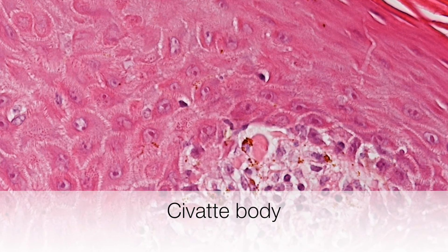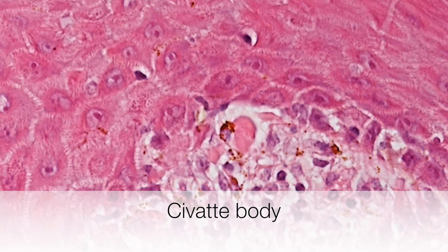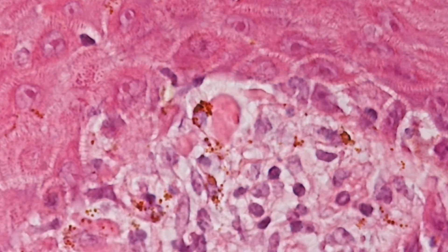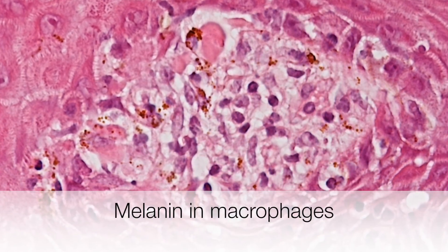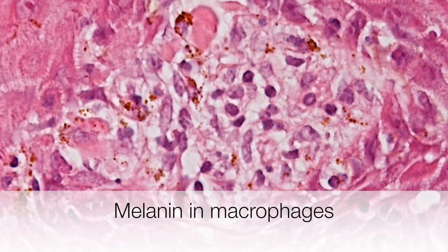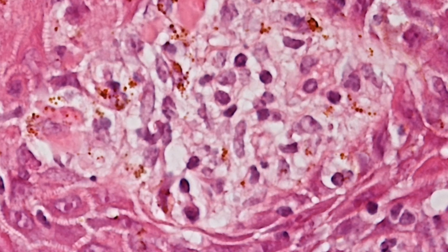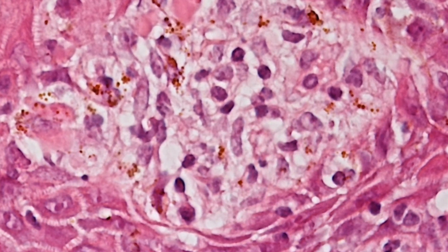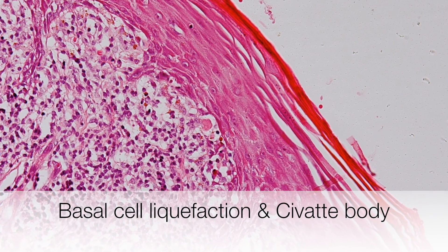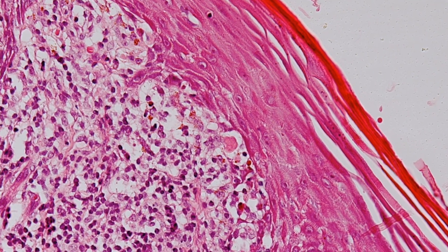The pink acellular structure we are zooming into at the centre of the picture at the dermoepidermal junction is a nice example of a civate body. And in the papillary dermis near the civate body there are macrophages containing the melanin liberated from the damaged melanocytes in the basal layer. And finally here is another example of basal cell liquefaction with civate body formation in the basal layer.